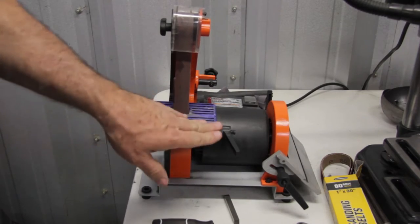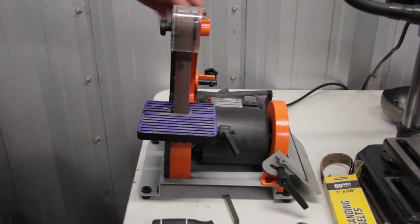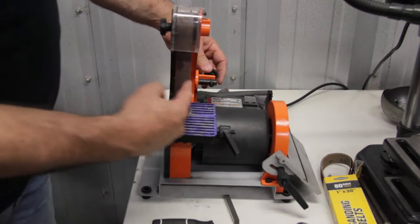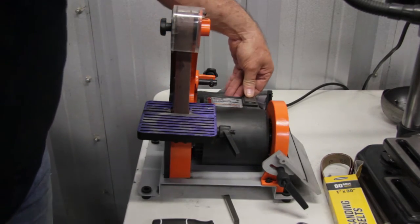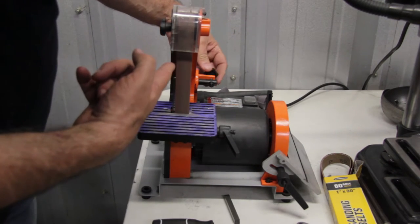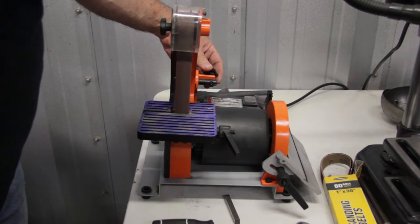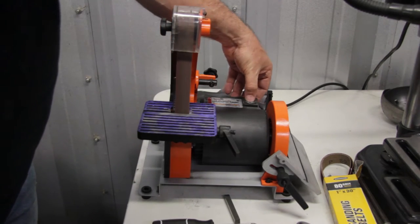On the external belt sander, there's three adjustments. You have the two table adjustments and then you have a belt centering adjustment. So right on the back, you can adjust that. I'll turn it on here and you can adjust and center the one-inch belt across the rollers. So it works there. It doesn't work really well.